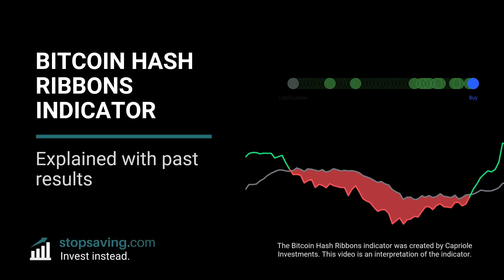The Hash Ribbons indicator created by Capriol Investments has provided great long-term Bitcoin buy signals in the past. It combines the fundamental analysis of Bitcoin mining data with the technical analysis of Bitcoin's price. I'm John from stopsaving.com, and in this guide I'll explain how the Bitcoin Hash Ribbons indicator works and test its historical accuracy for investors.